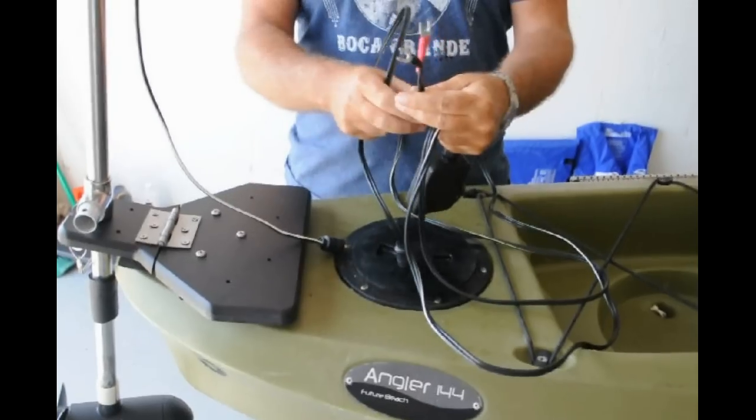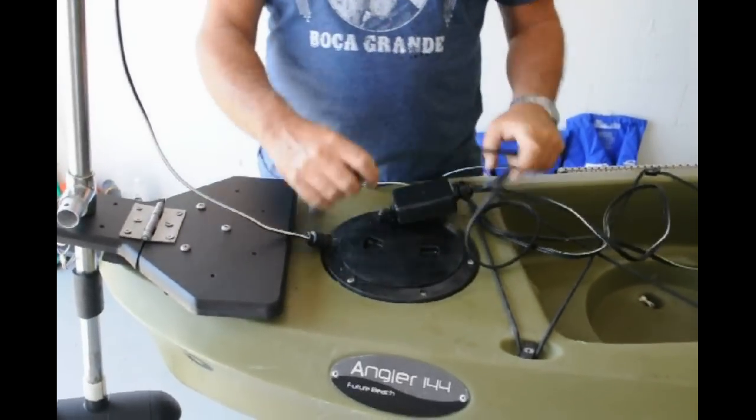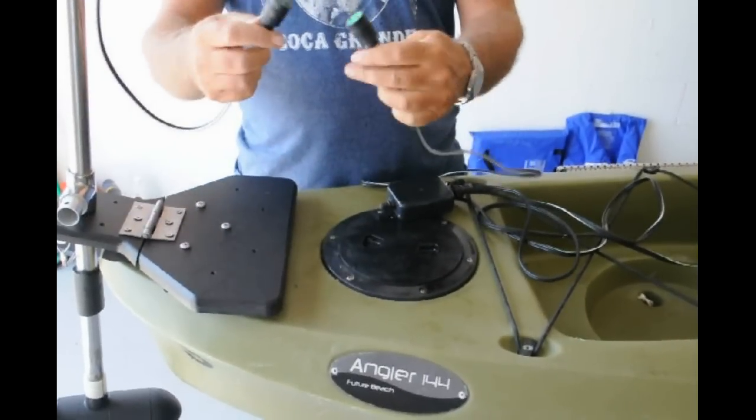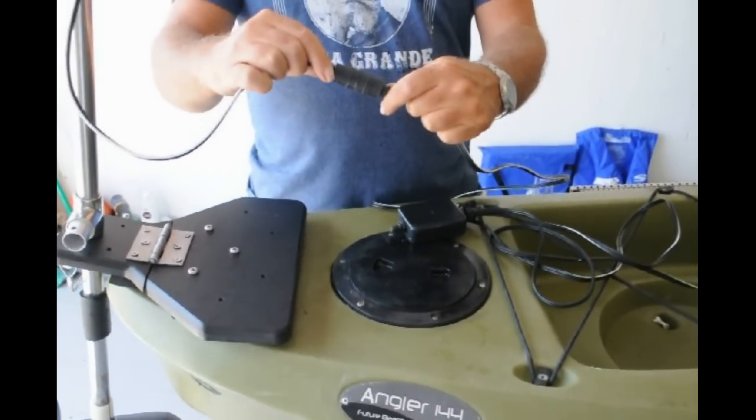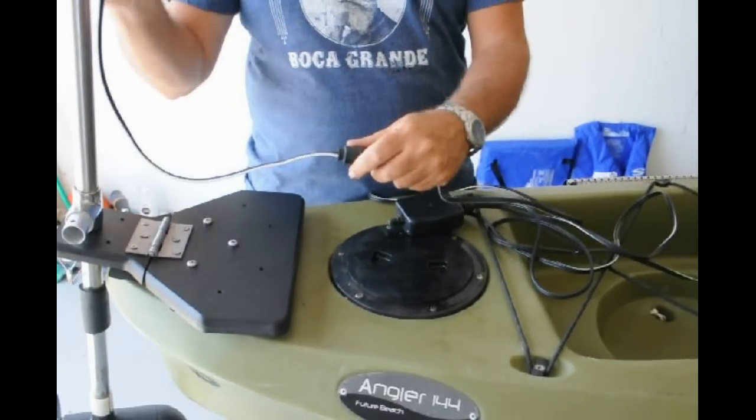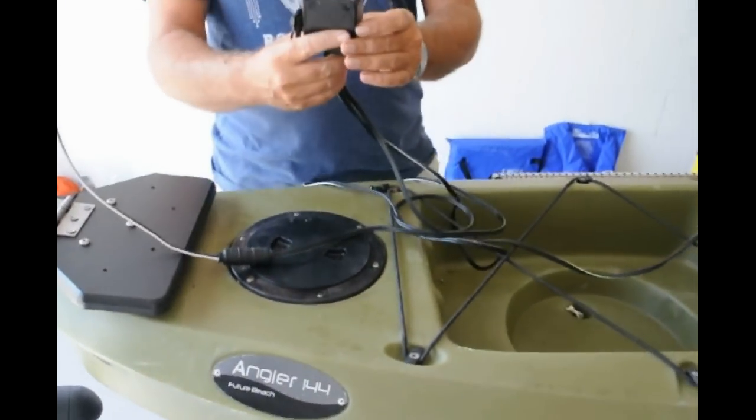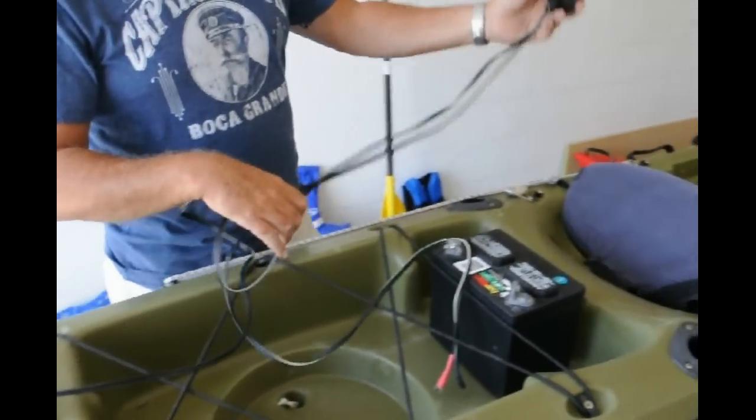This end goes to the battery, so we'll put that up. This end, there's only one way to do it. There's a connection right there. That will connect our battery to our motor. This is our control box. We're going to put this up by the seat.